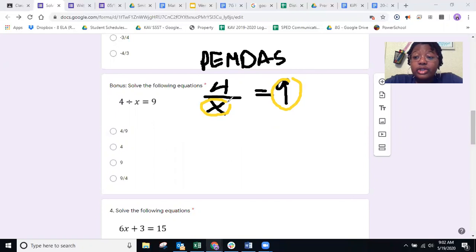So what you do here is you look at it as a fraction. 4 over x is the same as 4 over 1x because remember x is always 1. So we can rewrite it down here where it says 4 over 1x is equal to 9. Now it's easier for us to separate that x.